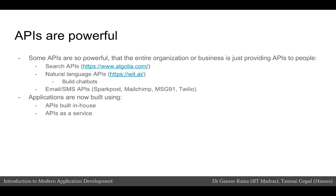In fact, APIs have become so powerful that over the last decade we've seen several organizations and businesses whose entire business is just providing APIs and not even entire applications. For example, Algolia is a search API that developers use to integrate search in their applications. Wit.ai is a natural language API that developers use to build chat bots. There are several email or SMS APIs that developers integrate with to send emails or SMS messages to their users.